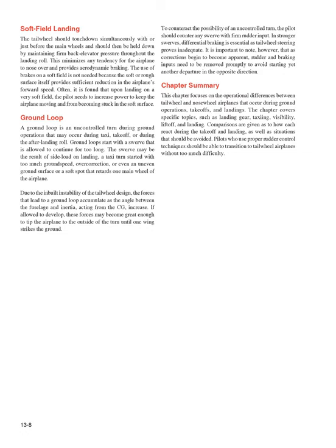This chapter focuses on the operational differences between tailwheel and nosewheel airplanes during ground operations, takeoffs, and landings, covering topics such as landing gear, taxiing, visibility, liftoff, and landing. Comparisons are given as to how each type reacts during takeoff and landing, as well as situations to avoid. Pilots who use proper rudder control techniques should be able to transition to tailwheel airplanes without too much difficulty.